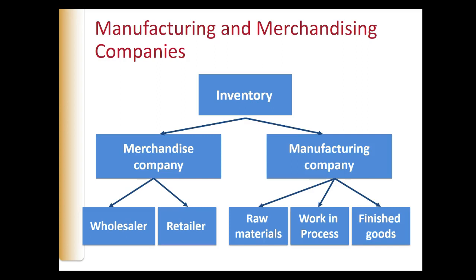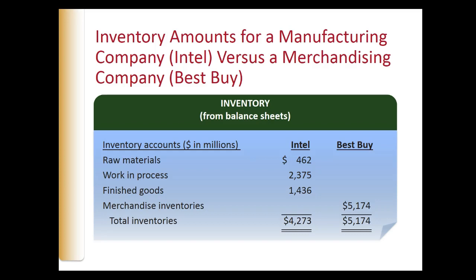Manufacturing companies manufacture the inventories they sell rather than buying them in finished form from suppliers. Raw materials inventory includes the cost of components that will become part of the finished product but have not yet been used in production. Work-in-process inventory includes products that have been started in the production process but are not yet complete. Finished goods inventory consists of items for which the manufacturing process is complete. At any given time, Intel's inventory includes raw materials, work-in-process, and finished goods.